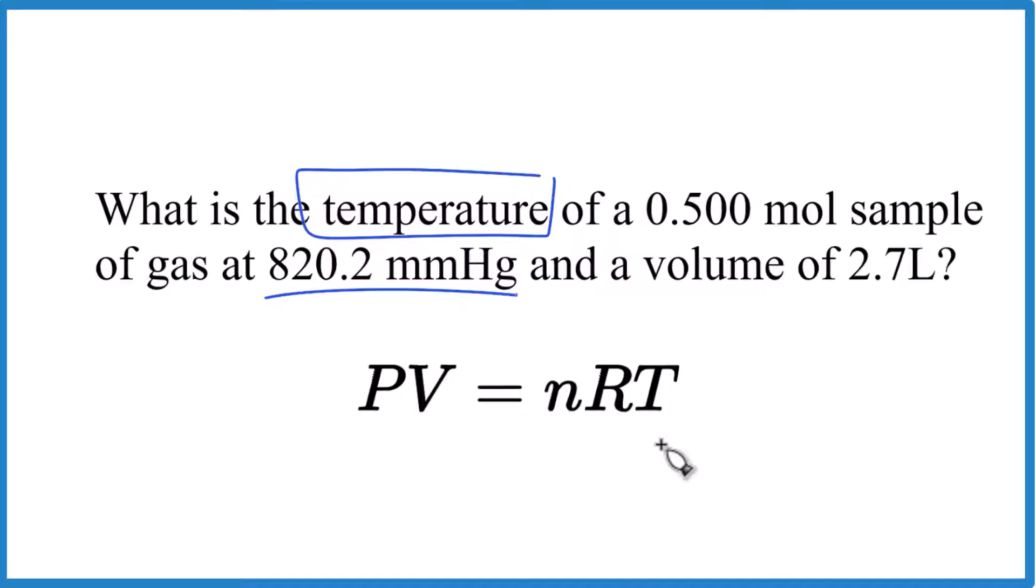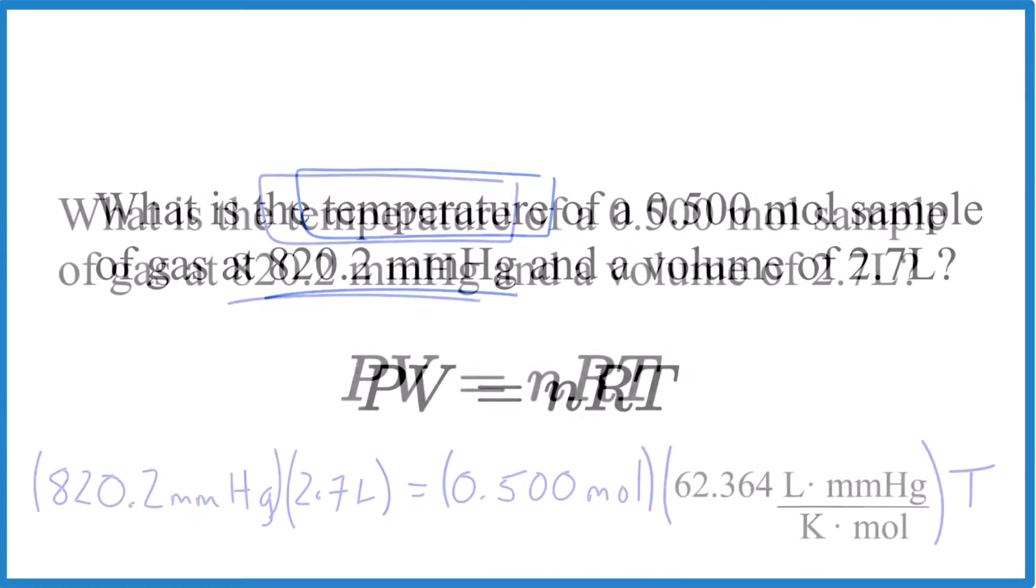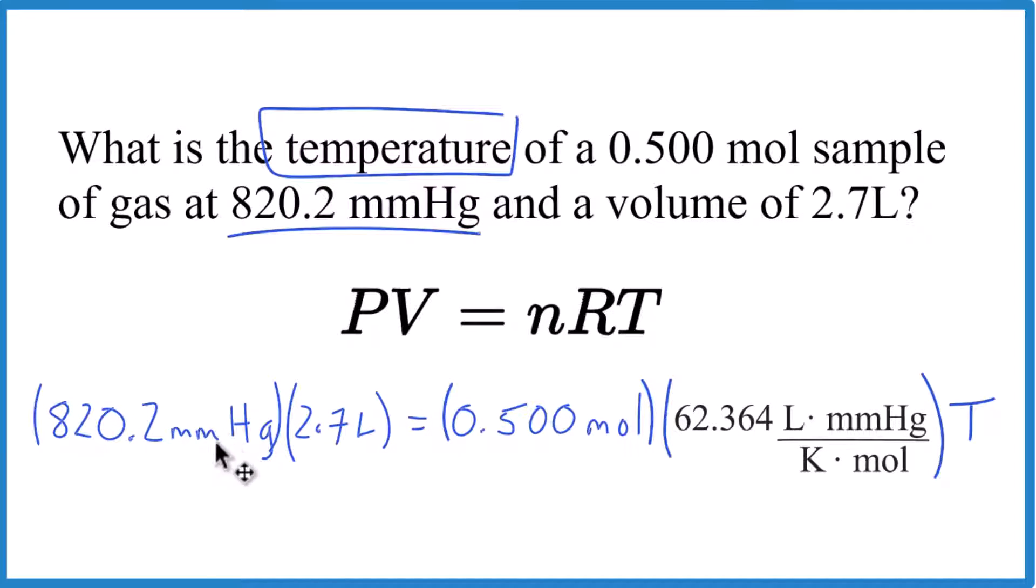So let me put everything in the equation here. And here's the deal. Since we have millimeters of mercury here, we need to use a constant that has millimeters of mercury in the constant. So this is the one we would use, and often you're given a list of these for a test.